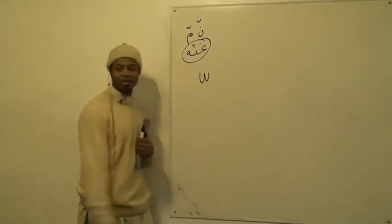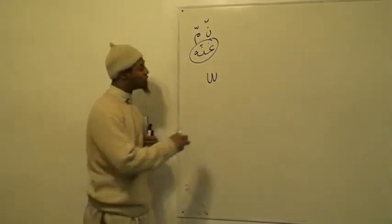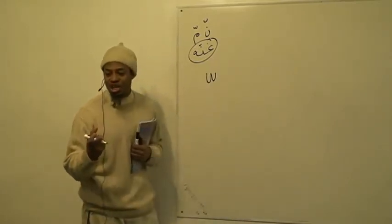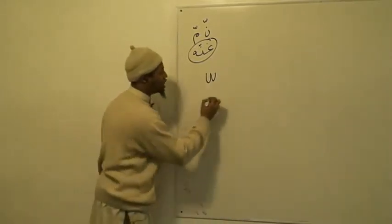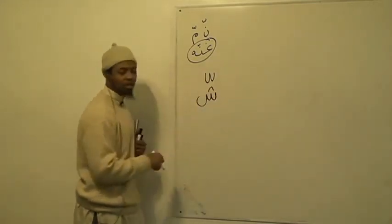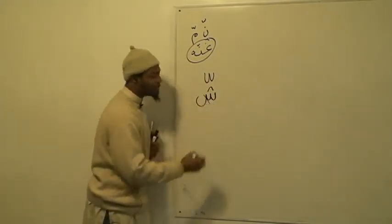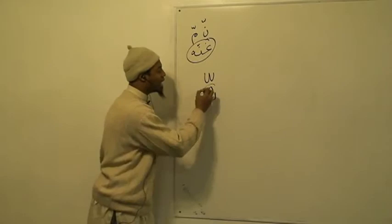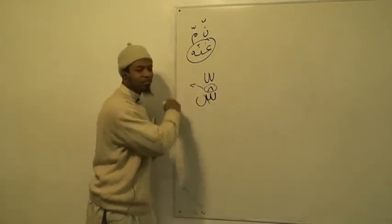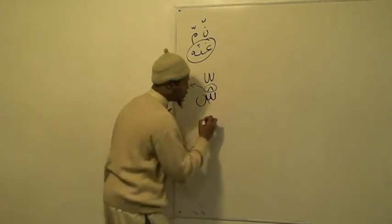But what is this sign here? It's the letter sheen — this letter with the three diacritical points. But what has happened? The tail has been cut off and the diacritical marks have been taken away.